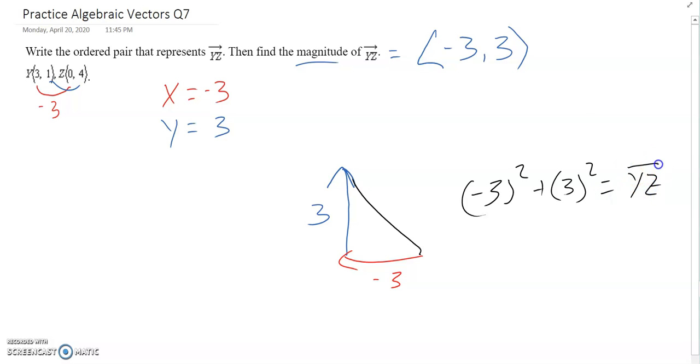YZ is what we're calling this one squared, so 9, 9. It looks like we get 18. Obviously, to get rid of this square we take the square root of both sides. Square root of 18, I can factor out a 9, I get 3 root 2 as the magnitude.